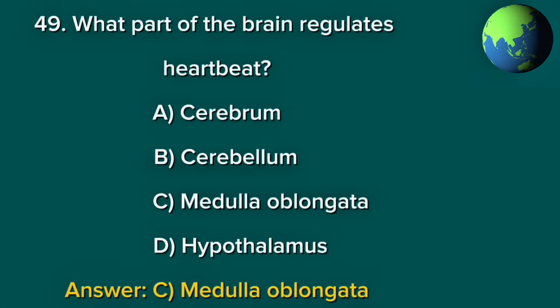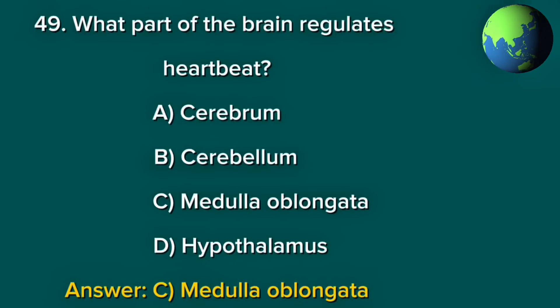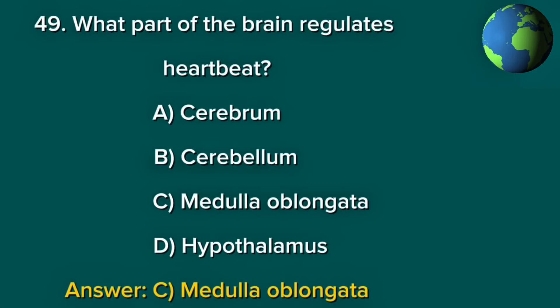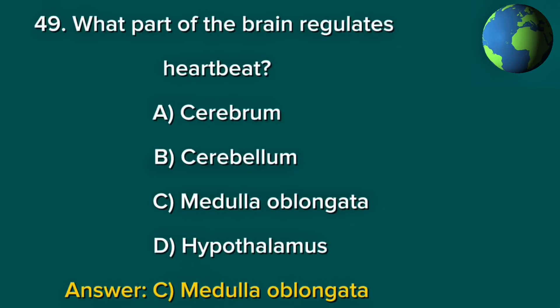Question 49. What part of the brain regulates heartbeat? A. Cerebrum. B. Cerebellum. C. Medulla oblongata. D. Hypothalamus. Answer: C. Medulla oblongata.